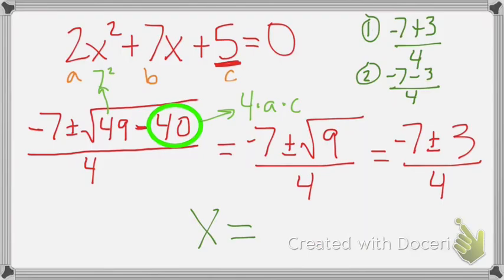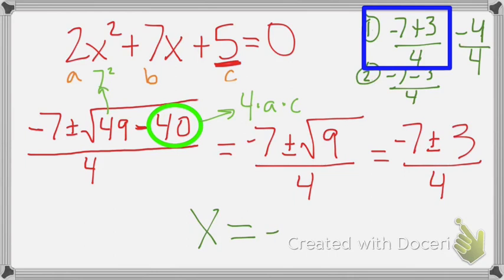So, let's look at this first one up here. If you do negative 7, and then you add 3 to it, that's going to give you negative 4. And then if you divide negative 4 by 4, you're going to end up with negative 1. So negative 1 is our first solution, our first answer.